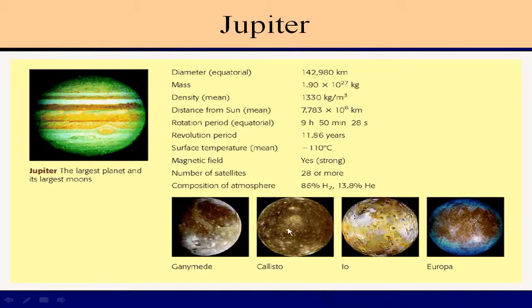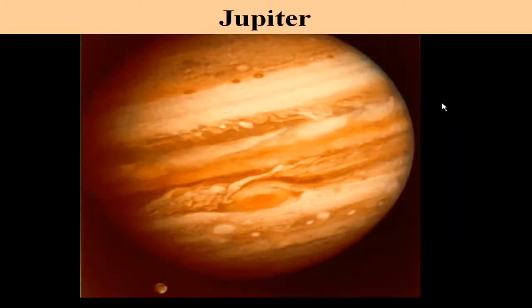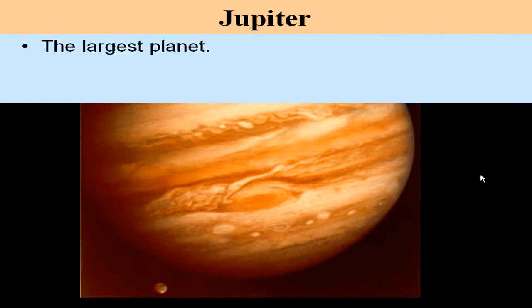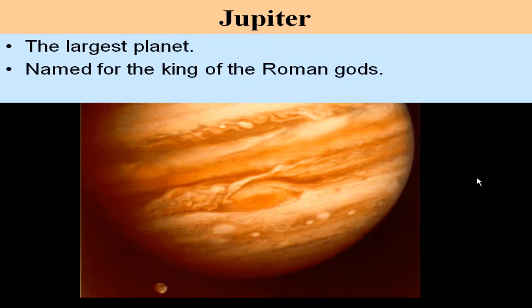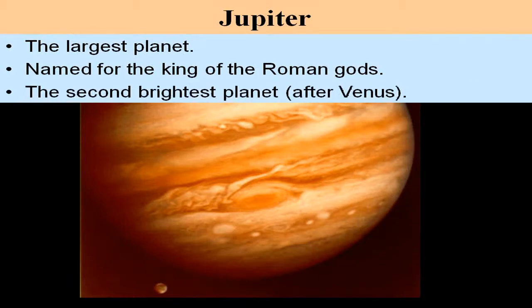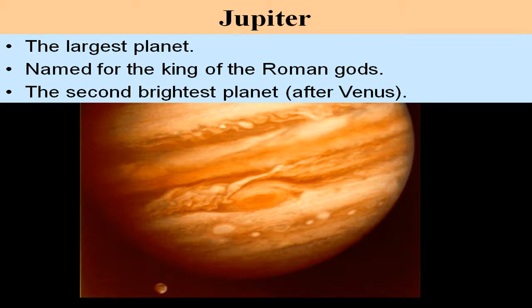Here is some data on Jupiter and its four prominent Galilean moons — named because Galileo discovered them. The four moons are Io, Europa, Callisto, and Ganymede. Jupiter is the largest planet, named for the king of the Roman gods, and is the second brightest planet after Venus because of its size and its full reflection as an outer planet. At its brightest — about one month a year — it will be brighter than any star and brighter than most planets except Venus.